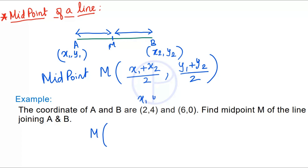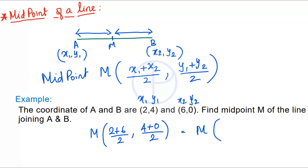Here x1 = 2, y1 = 4, x2 = 6, y2 = 0. So M = ( (2 + 6) / 2 , (4 + 0) / 2 ) = ( 8/2 , 4/2 ) = (4, 2). So the midpoint M is (4, 2).